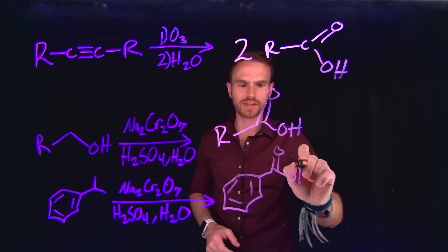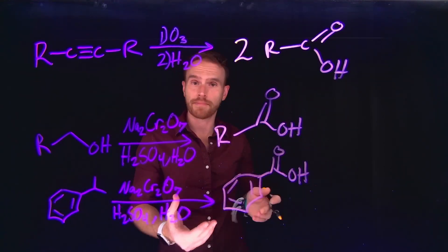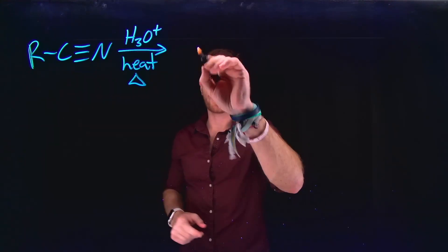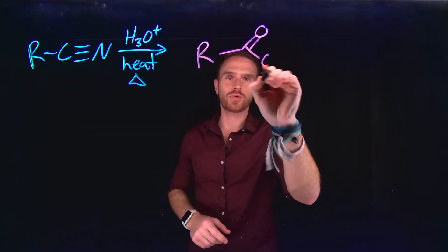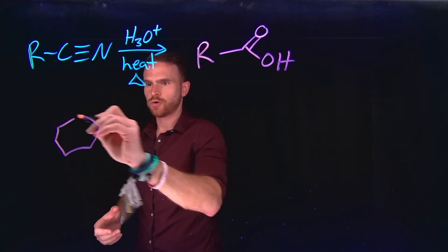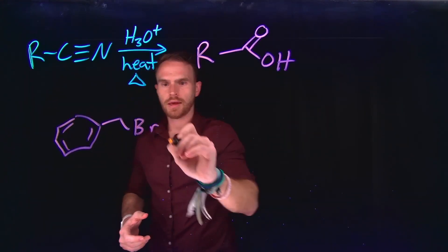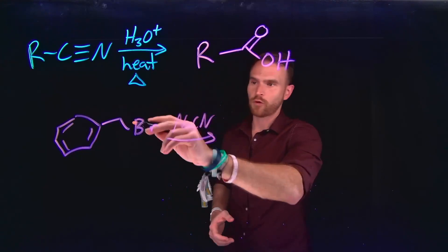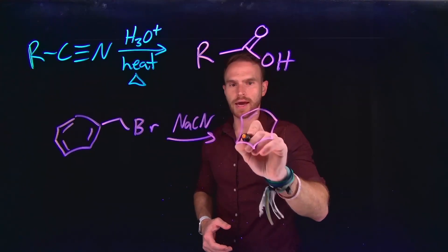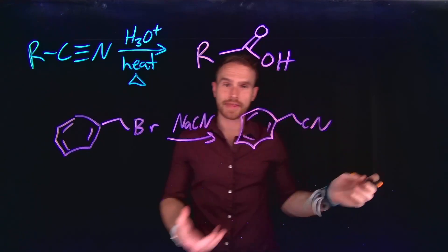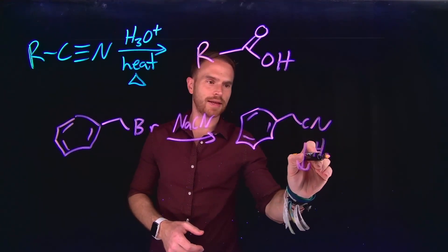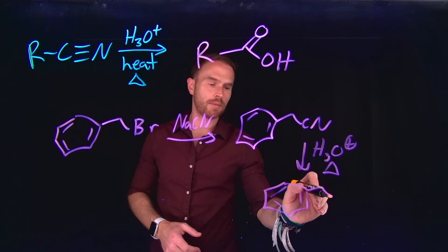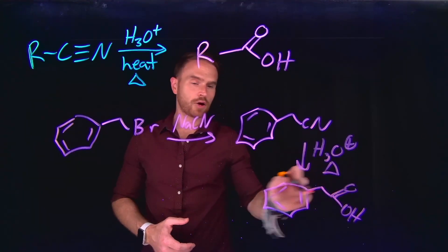Nitriles can also be hydrolyzed into carboxylic acids when treated with aqueous acid in the presence of heat. For example, to convert benzyl bromide into a carboxylic acid, you could use sodium cyanide to perform a substitution reaction generating benzyl cyanide. Then, adding aqueous acid with heat allows you to oxidize that nitrile to form a new benzyl carboxylic acid.